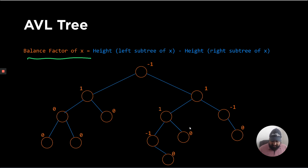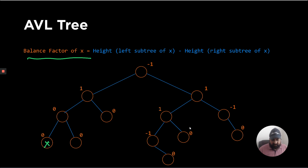In this particular tree, as we discussed in the last video, the balance factor is the height of the left node minus the right node. For node x with no children, the left height is 0 and the right height is 0, giving a balance factor of 0. For another leaf node, it is also going to be 0 because there are no children.